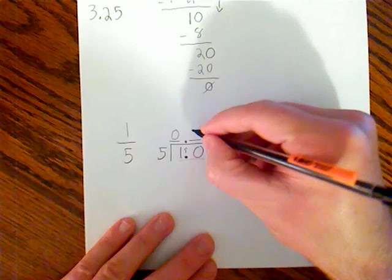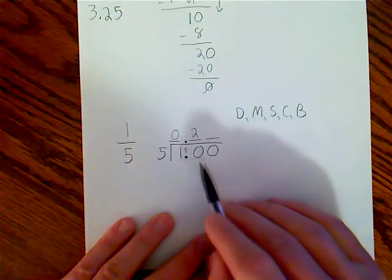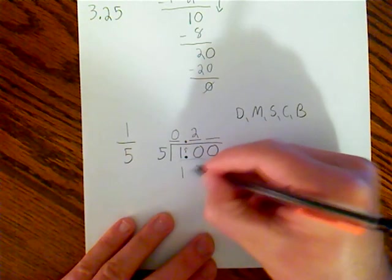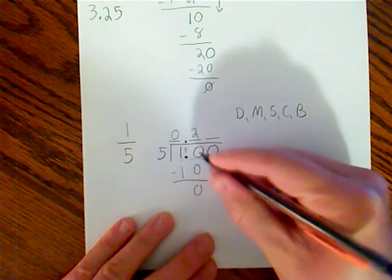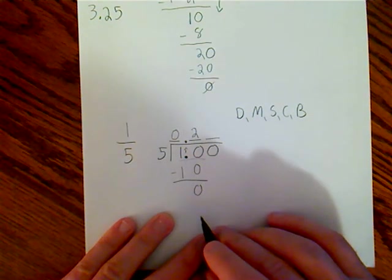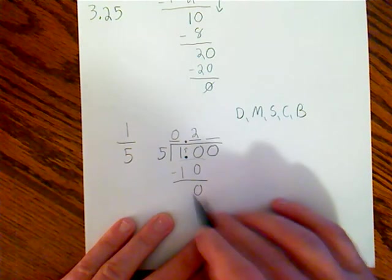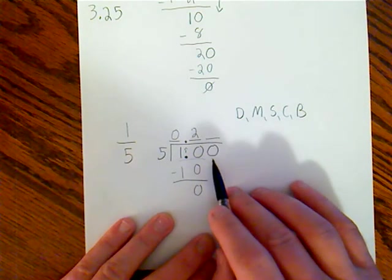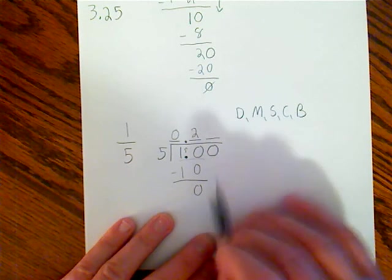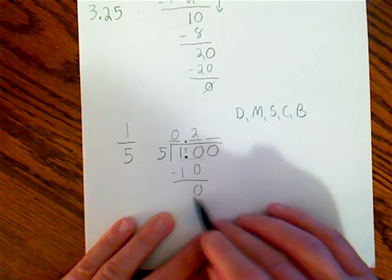Now I'm multiplying. 2 times 5 is 10. Now I'm subtracting. 10 minus 10 is 0. Zero is definitely less than five, so the check there is good. And hey, I've got nothing remainder, and I don't have anything to bring down other than those zeros.